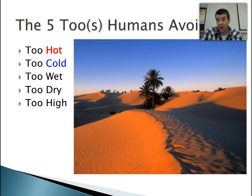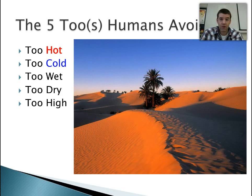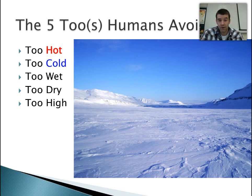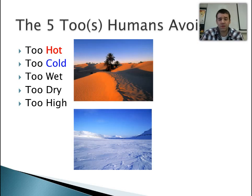We can talk about what the five things are that human populations tend to avoid in terms of large concentrations. We can look at conditions that are too hot — it's simply too difficult to maintain daily activities and support a large population. We can also look at conditions or climates that are too cold. Taking an image from the Arctic and the last one from the Sahara, the extremeness of the temperatures changes human activity and the ability to support populations.